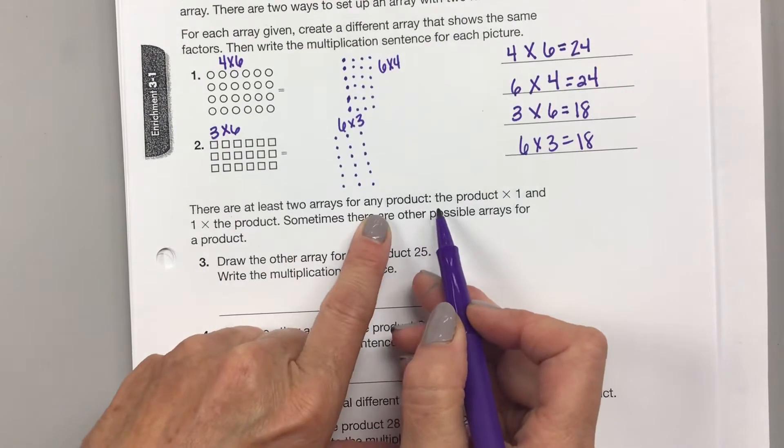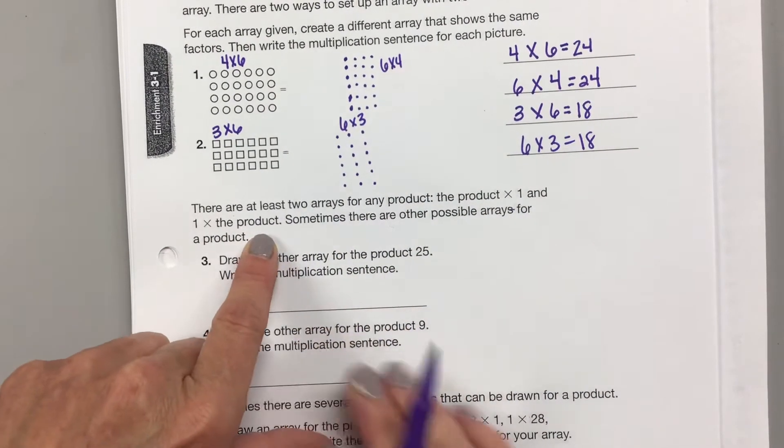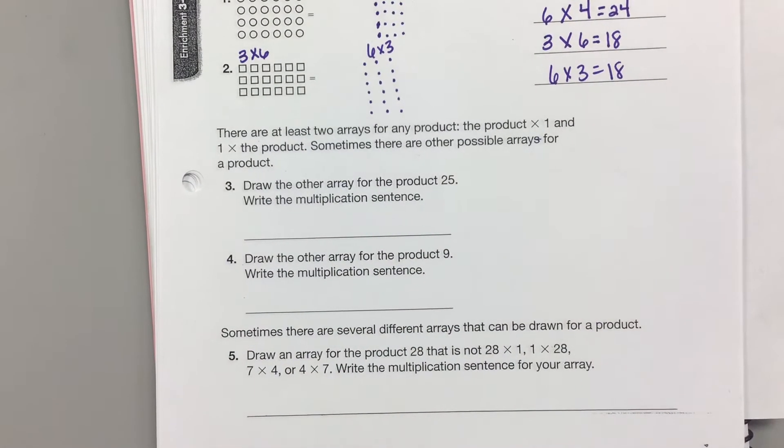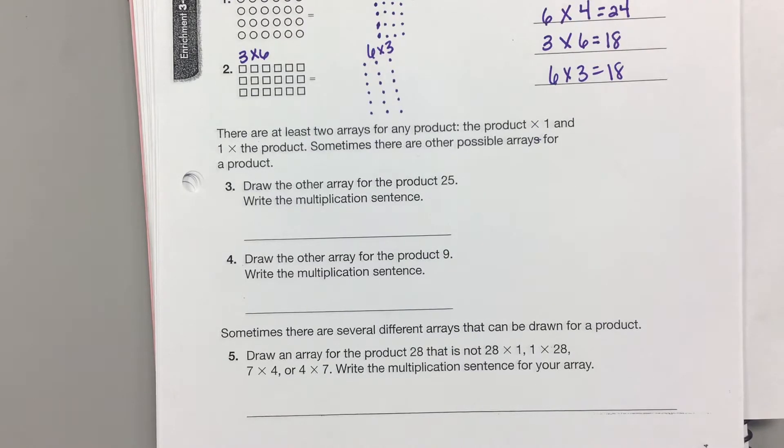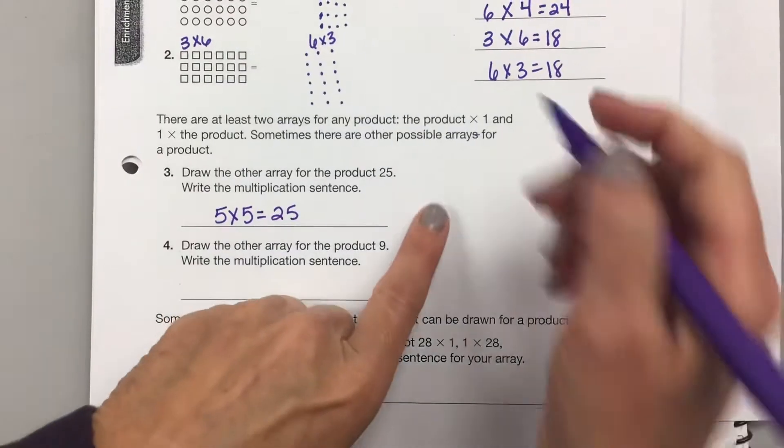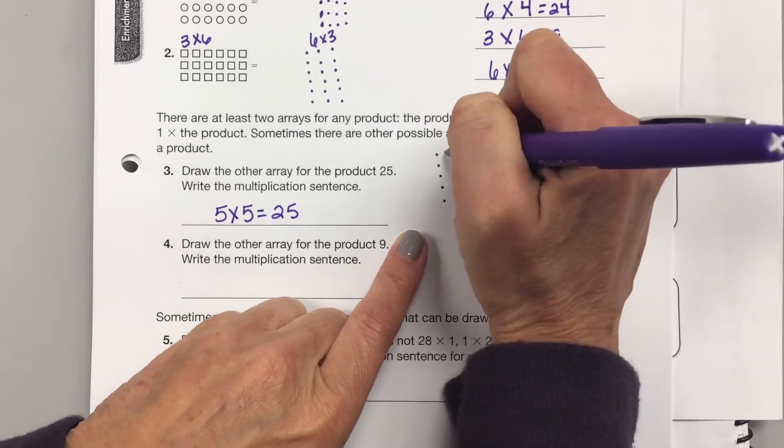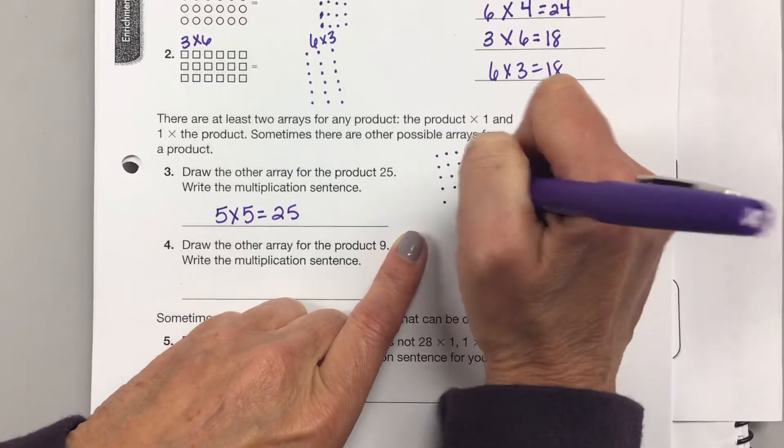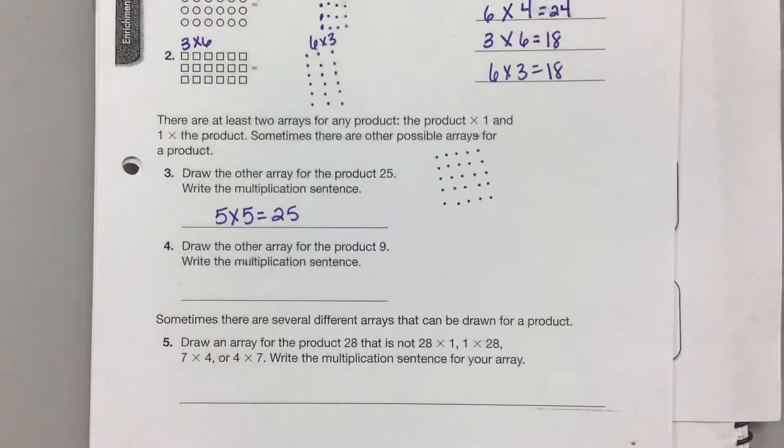So there are at least two arrays for any product, the product times one and one times the product. Sometimes there are other possible arrays for a product. Draw the other array for the product 25. So you could do one times 25, so one row of 25, or you could do 25 rows of one. What's another way we could do it? What's another way we could do it to get the product 25, Olive? That would be 24. We need 25. Gemma? Five rows of 25. Right, so the multiplication sentence is going to be five times five equals 25. And our array is going to be five rows, and there's going to be five in each row.